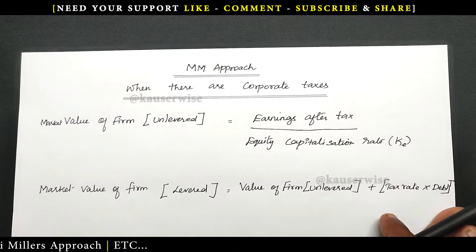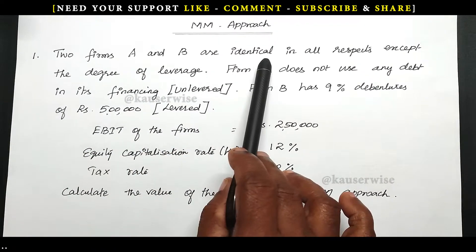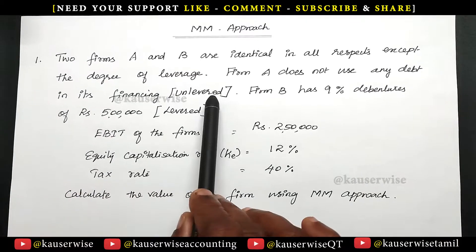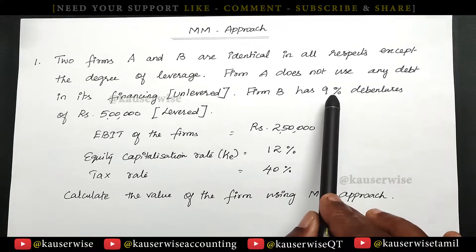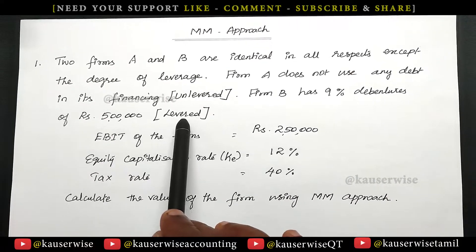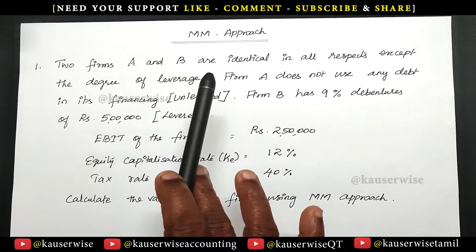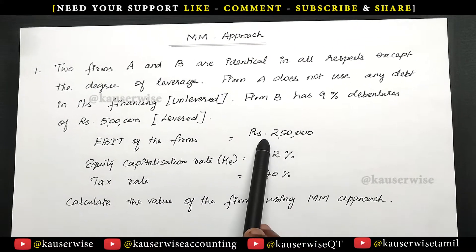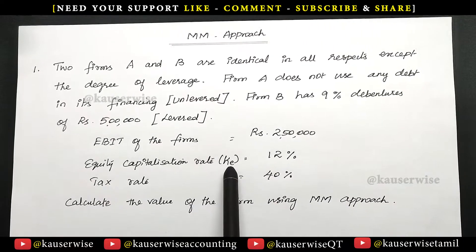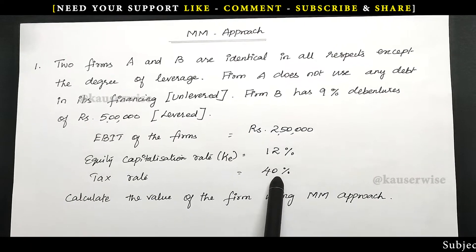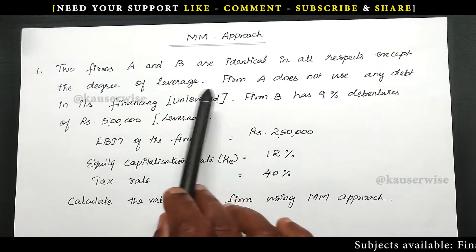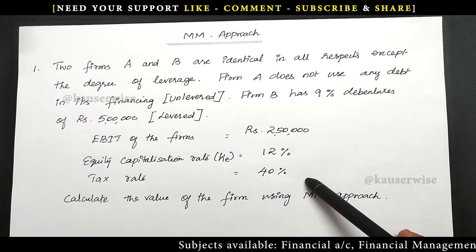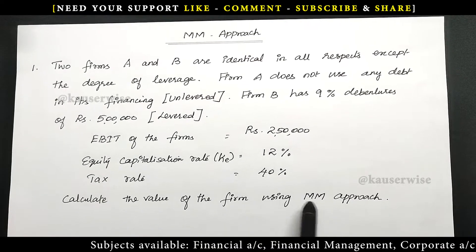Now let us see the numerical problem for better understanding. Two firms A and B are identical in all respects except the degree of leverage. Firm A does not use any debt in its financing — that is the unlevered company. Firm B has 9% debentures of rupees 5 lakhs — that is the levered firm. EBIT of the firms is rupees 2,50,000. Equity capitalization rate (KE) is 12%. Tax rate is 40%. They are asking us to find out the value of each firm using MM approach.